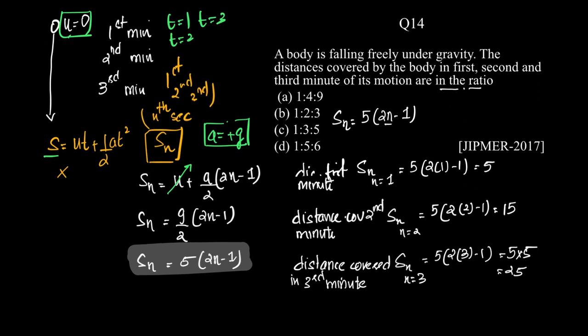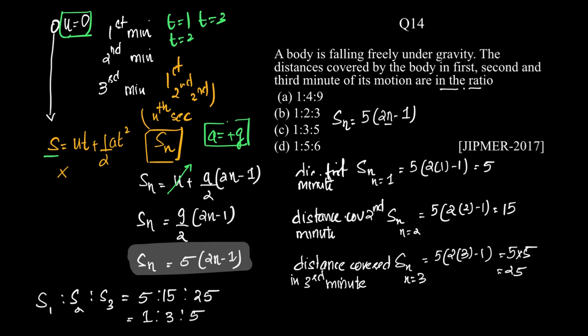So the ratio S₁ : S₂ : S₃ = 5 : 15 : 25 = 1 : 3 : 5. This makes the correct option C.